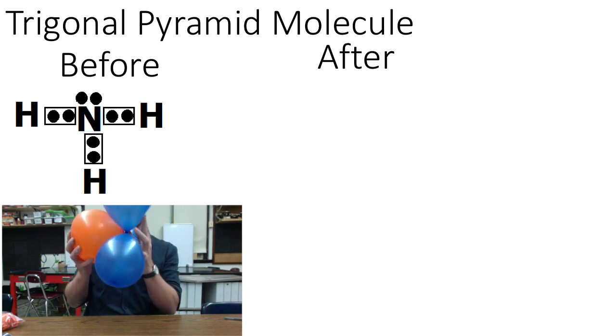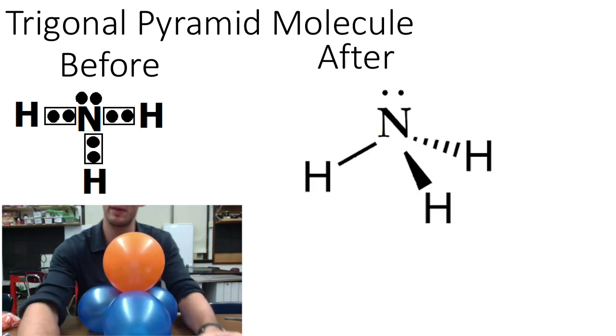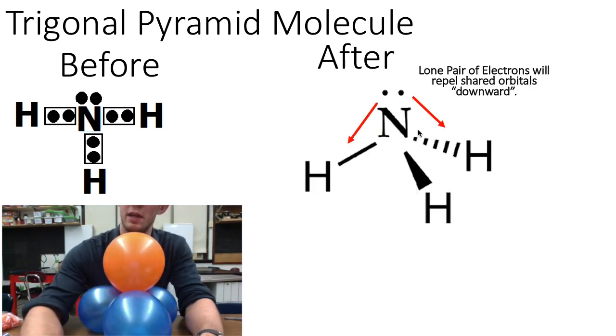That is, they're not on a flat plane, the three elements repel down into a pyramid shape. And we can see that here, this lone pair of electrons repelling the three elements downward.